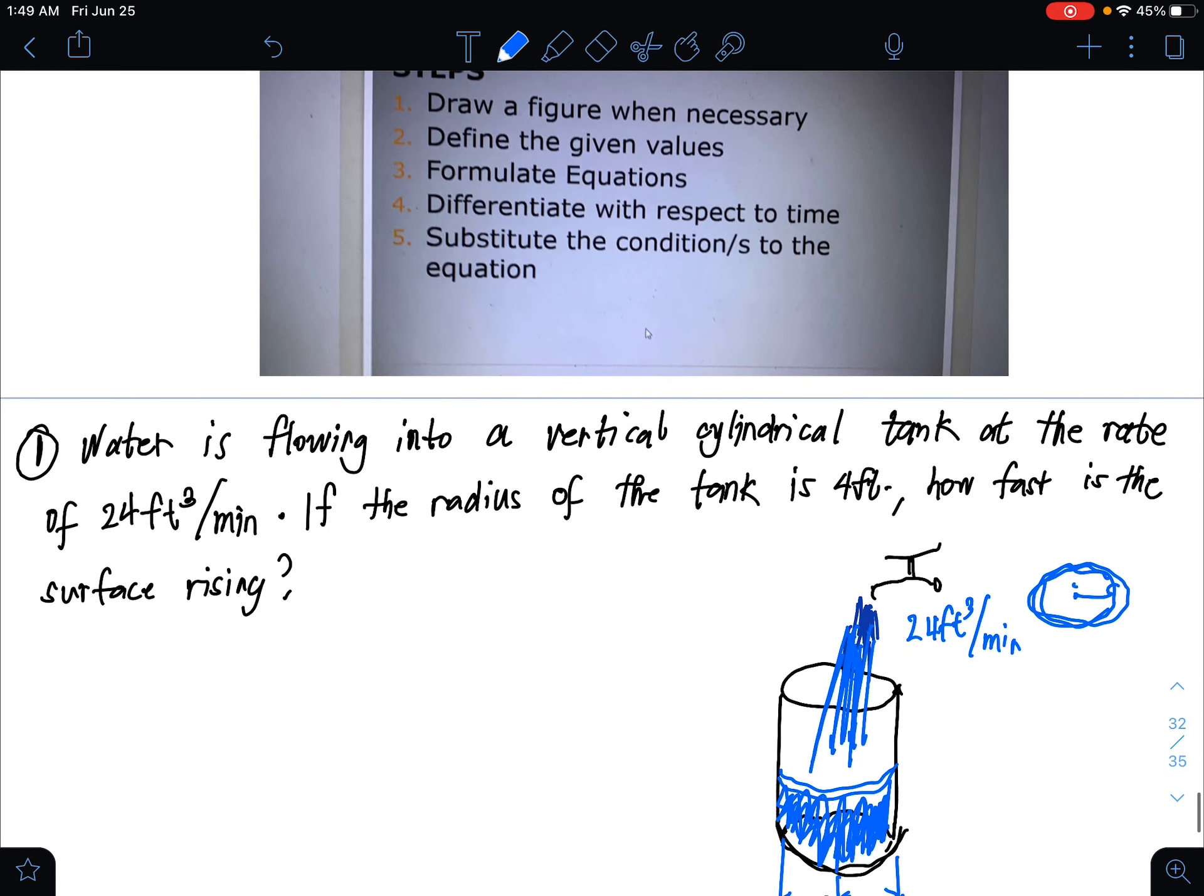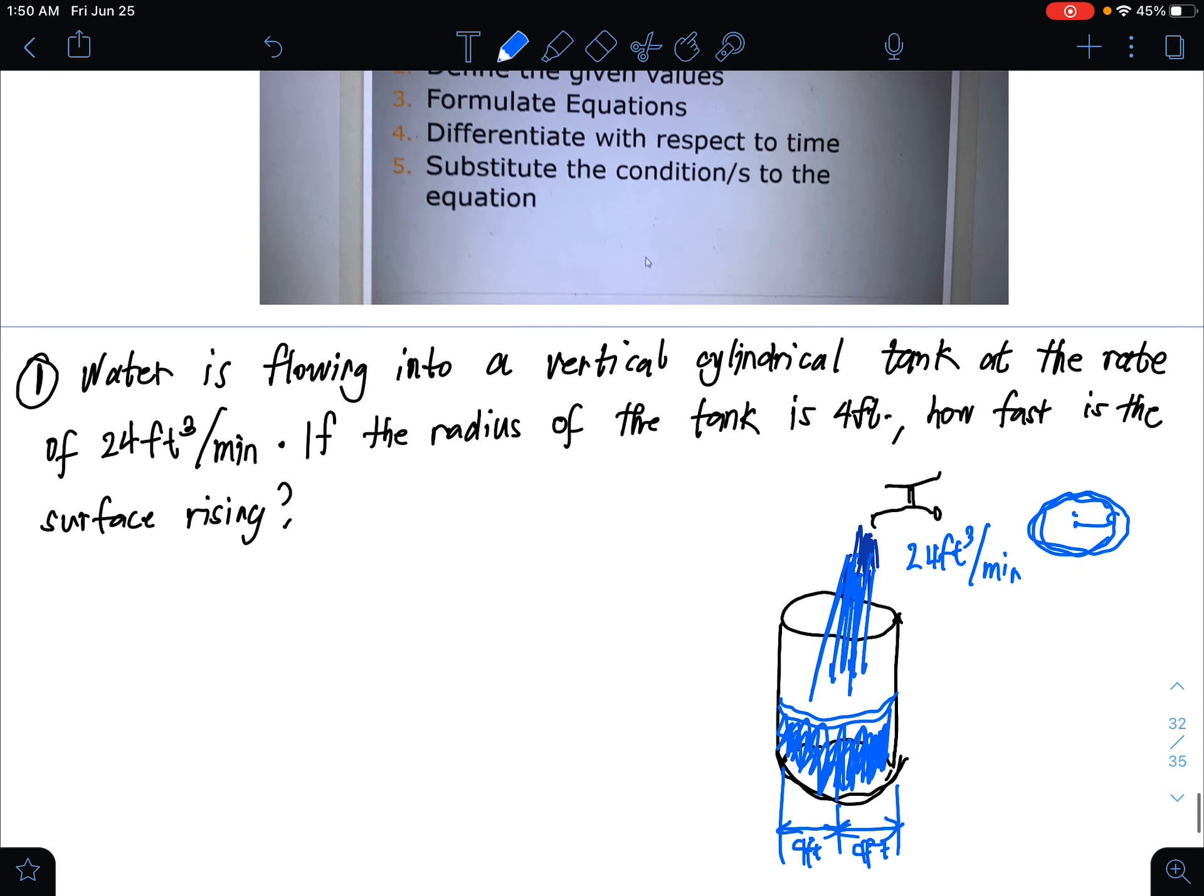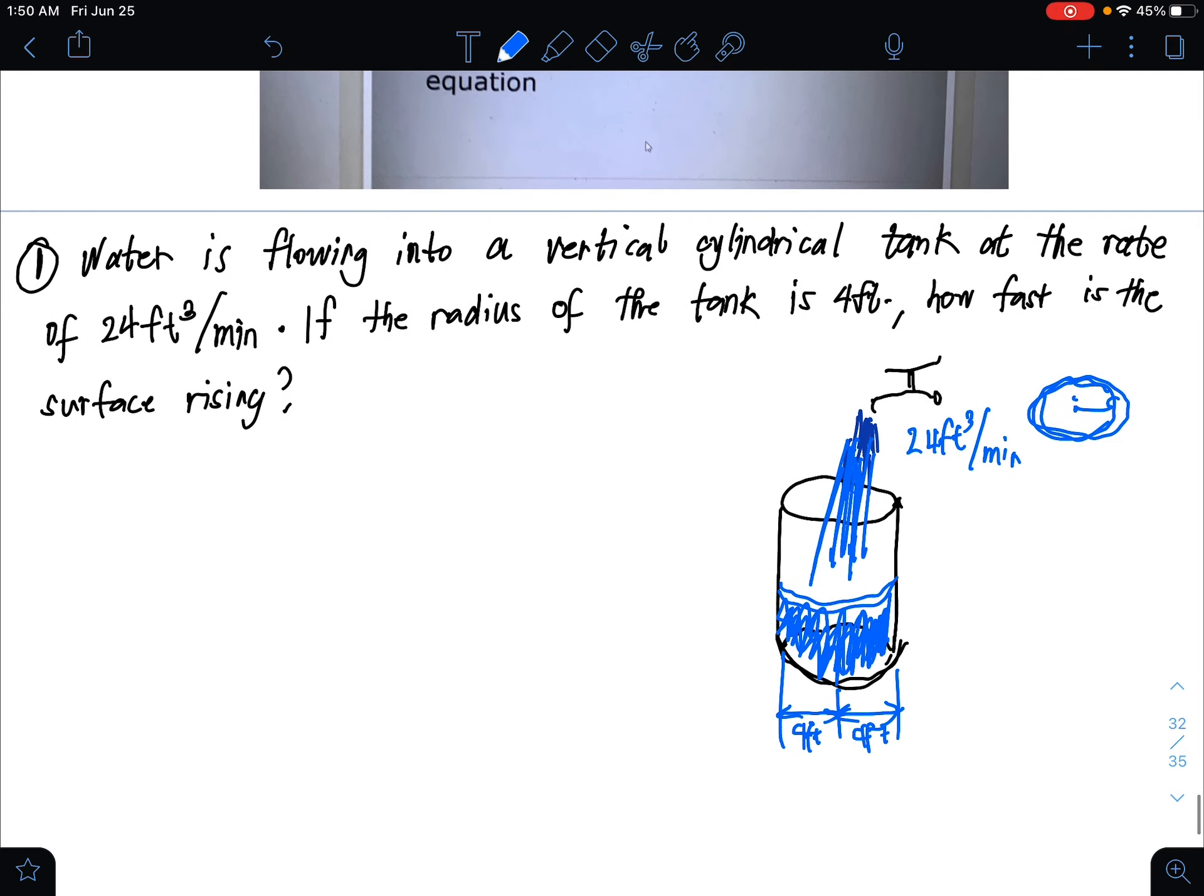Next step is to formulate equations. You formulate equations based on what's given. The given is it's a cylinder, and it talks about water. So what is the volume of the water? The volume of the cylinder is pi r squared h. Now we've formulated an equation.